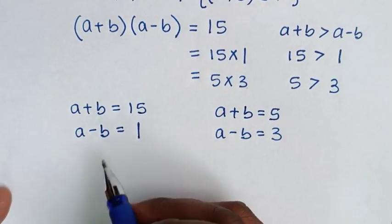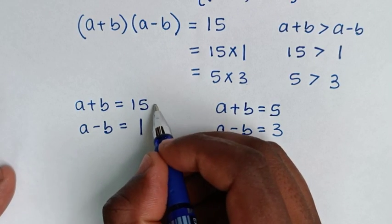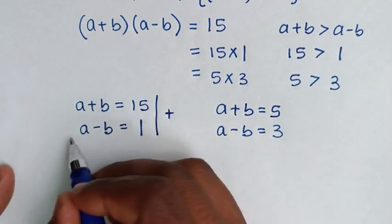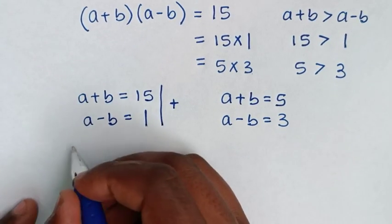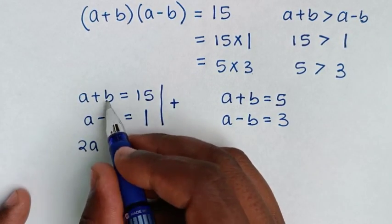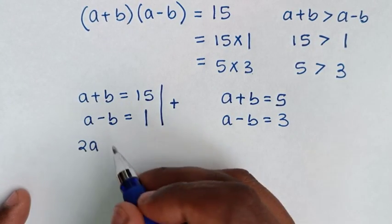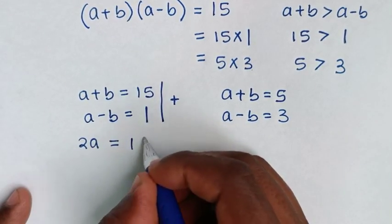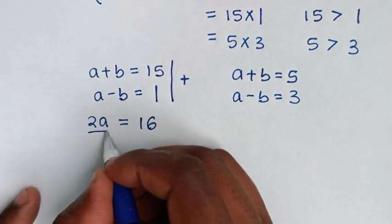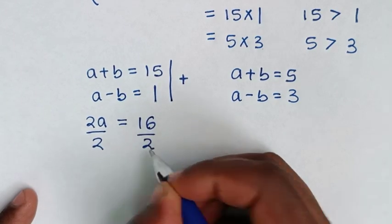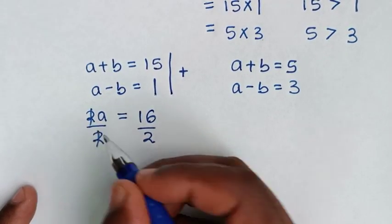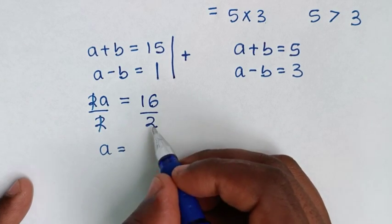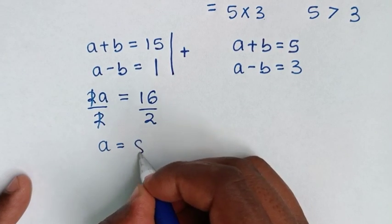To solve the first system, we use the elimination method. Adding the two equations: a plus a gives 2a, and b plus negative b cancels to 0, giving 2a equals 15 plus 1, which is 16. Dividing both sides by 2, we get a equals 16 divided by 2, which is 8.